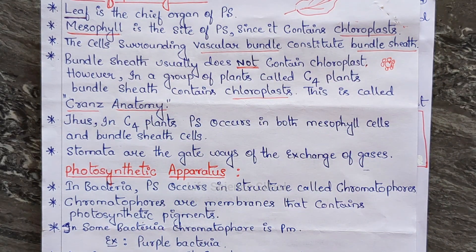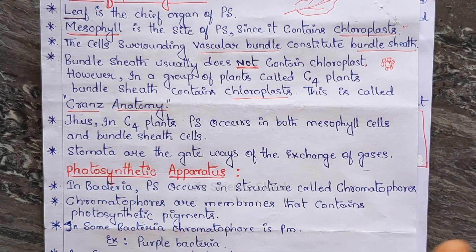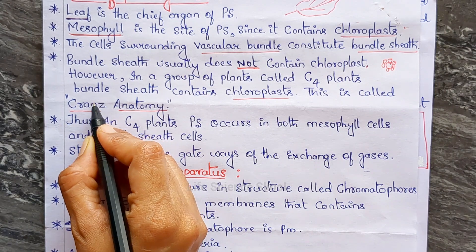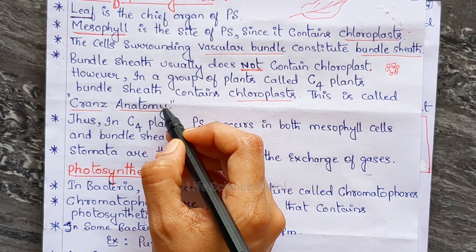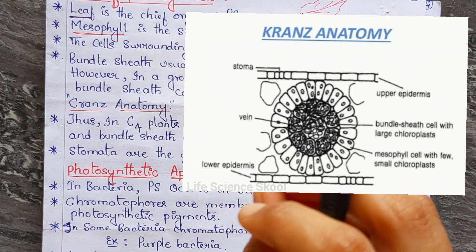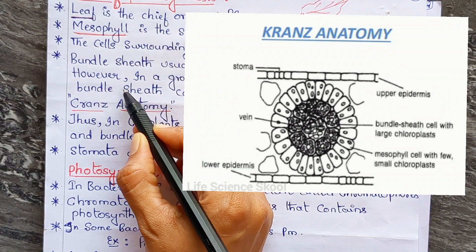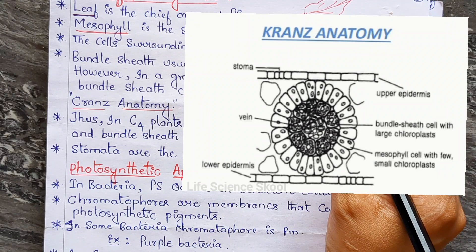In Kranz anatomy, chloroplasts are found in the mesophyll cells normally, but in C4 plants the bundle sheath also contains chloroplasts. Kranz anatomy is a special structure in C4 plants where the mesophyll cells are clustered around the bundle sheath in a ring-like fashion. Also, the number of chloroplasts in the bundle sheath is more than in the mesophyll cells in C4 plants.